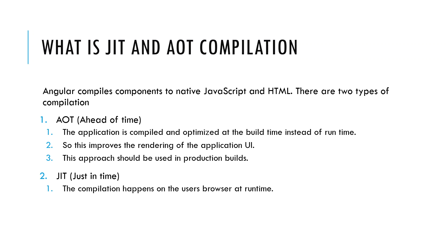What is JIT and AOT compilation? Angular compiles components to native JavaScript and HTML. There are two types of compilation: AOT (Ahead of Time) and JIT (Just in Time). In the case of AOT, the application is compiled and optimized at build time instead of runtime, which improves rendering of the application UI — this approach should be used in production builds. In the case of JIT, compilation happens on the user's browser at runtime.